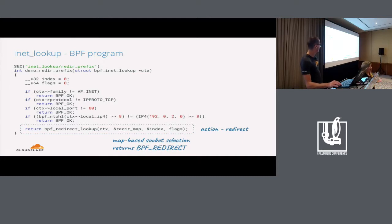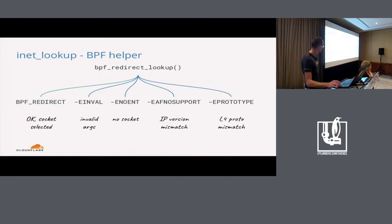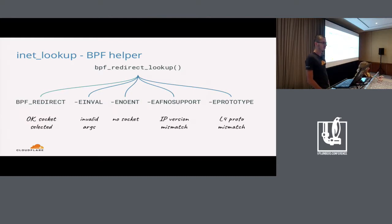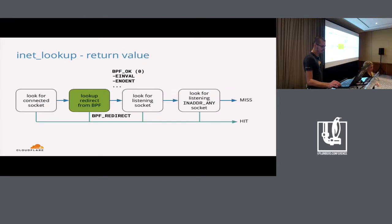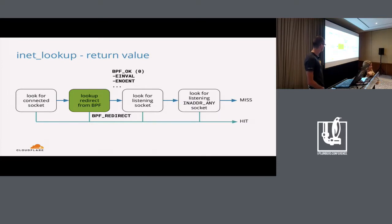The helper also returns an action code for the direction to take. If all goes well, we return action code for redirect. But things can also go wrong — there can be no socket in the array under a given index, or it might not be accepting the IP version of the packet, or the transport protocol might be completely different. In that case we get an error, and the semantics here are really similar to how reuseport programs select their sockets. To recap: the program is allowed to look for a socket and terminate the lookup early if a BPF redirect action code is returned. In any other case, we fall back to looking for a listening socket as usual.